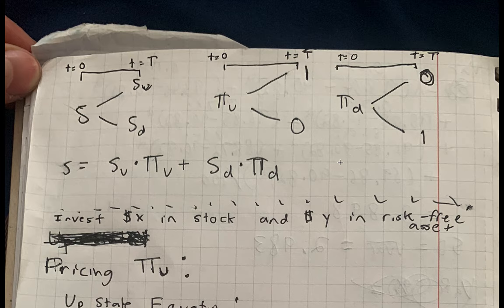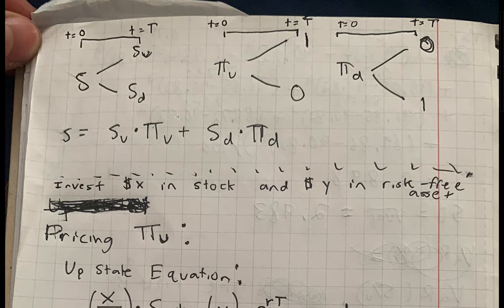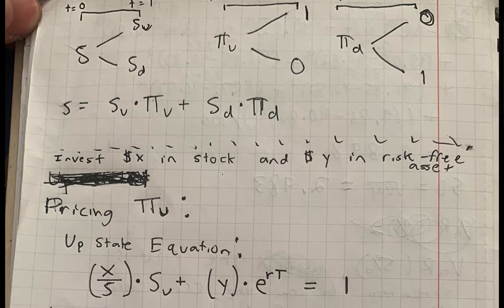This gives an example of how you can combine arrow securities to construct other types of securities. Later we'll expand this to price call options and general securities. What's important now is figuring out how to price these arrow securities, because once we can price them, we'll be able to price any security that is a combination of arrow securities.